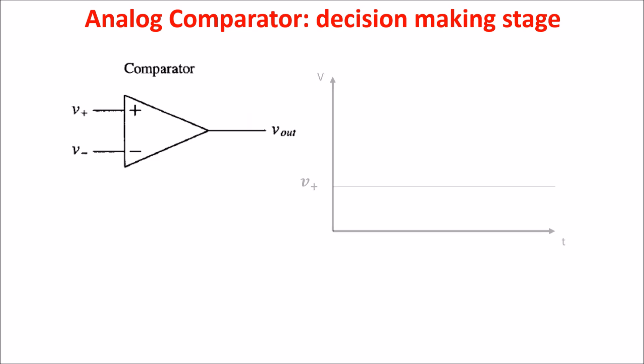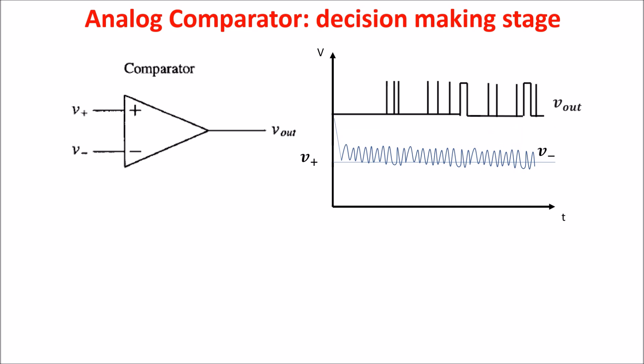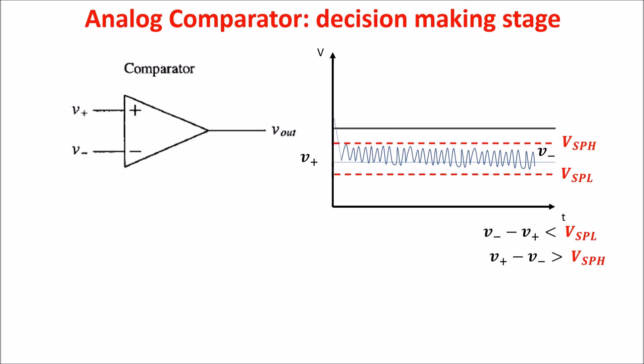For example, let's say that V plus is this stable signal and V minus is this noisy signal. You see that in average V minus is larger than V plus, but it becomes lower many times because of the noise. The output will be this, in which you see many switches from low to high and this is bad. We prefer keeping into consideration the noise and create some hysteresis. So we want the switch from low to high occurring only when V minus minus V plus is less than VSPL and the switch from high to low occurring only when V plus minus V minus is more than VSPH. So we have two thresholds and not one. In this case, the output would be this because when the signals are in the hysteresis range, nothing happens and we keep the last value, which is a low output voltage in our case.